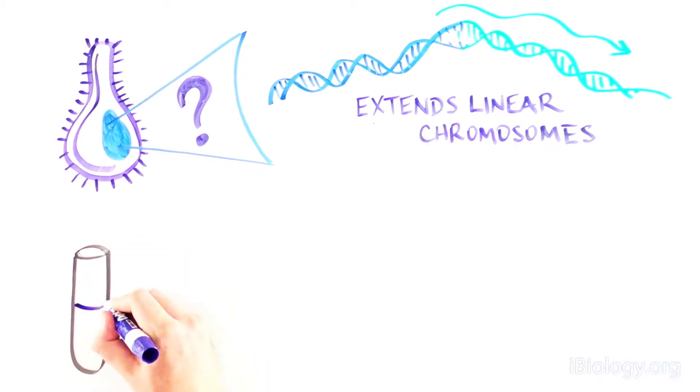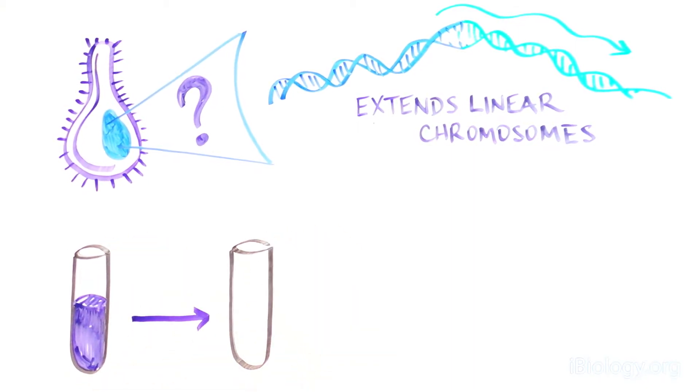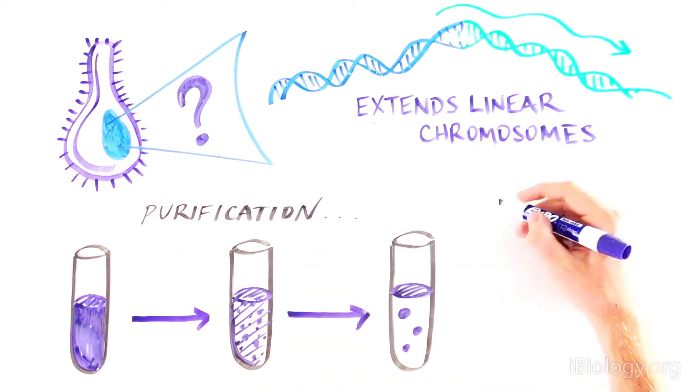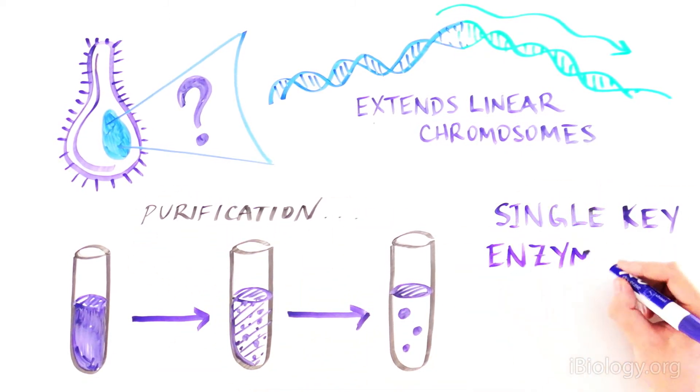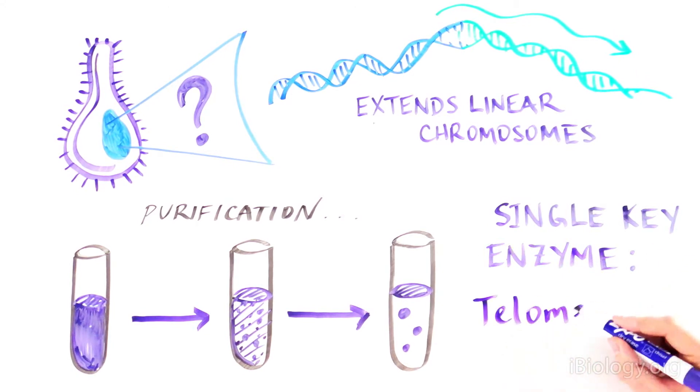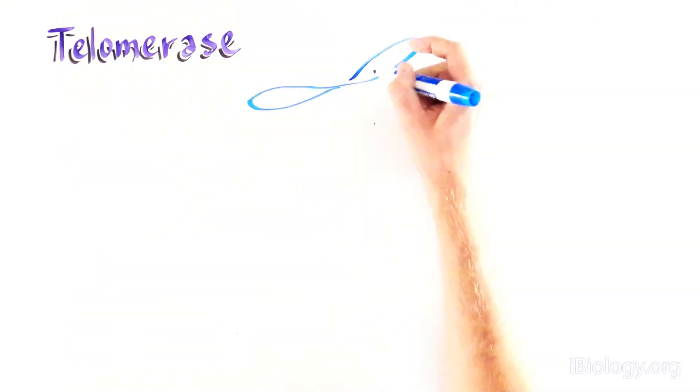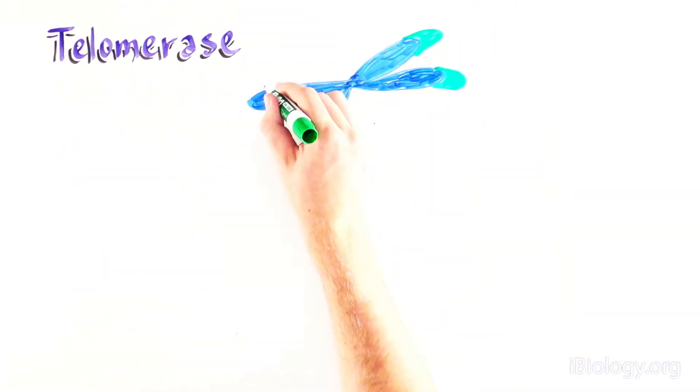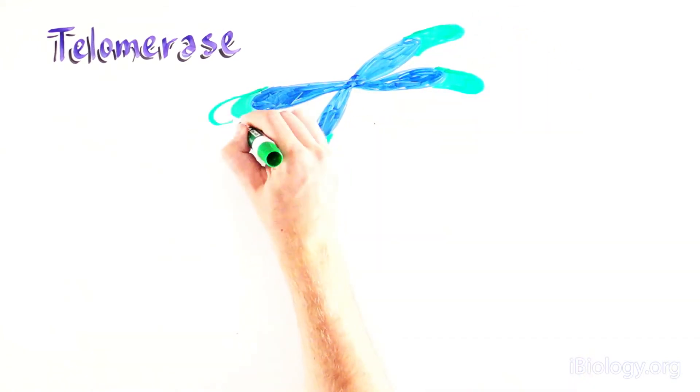By doing multiple rounds of biochemical purification, Elizabeth Blackburn and Carol Greider then went on to show that a single key enzyme is responsible for this. They called this enzyme telomerase, since it produces telomeres. By discovering that telomerase is the enzyme that can extend the protective caps at the ends of chromosomes called the telomere, these scientists solved one of the most important puzzles in biology.